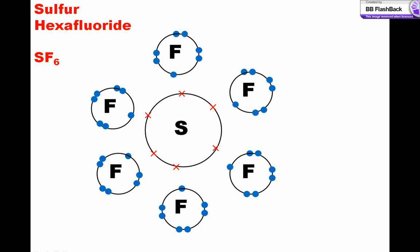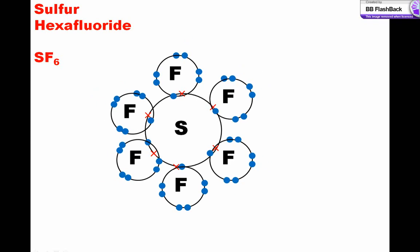Sulfur hexafluoride is an interesting case. Sulfur has 6 electrons in its outer shell, and forms 6 single covalent bonds with fluorine. There are no lone pairs of electrons to consider.